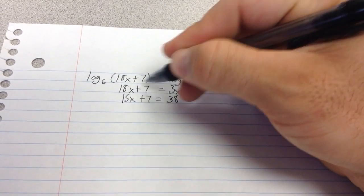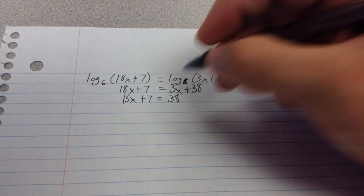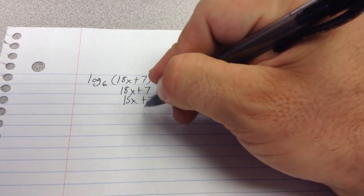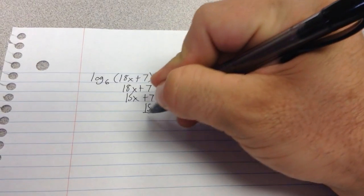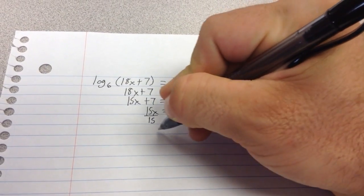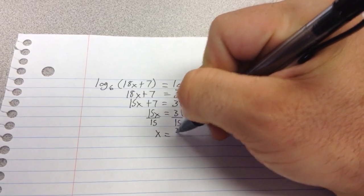Again, subtracting the 3x over here. Then you subtract the 7 from the 38, so you end up with 15x equals 31, and then we divide by 15 on both sides. When we divide by 15, we get 31 over 15.